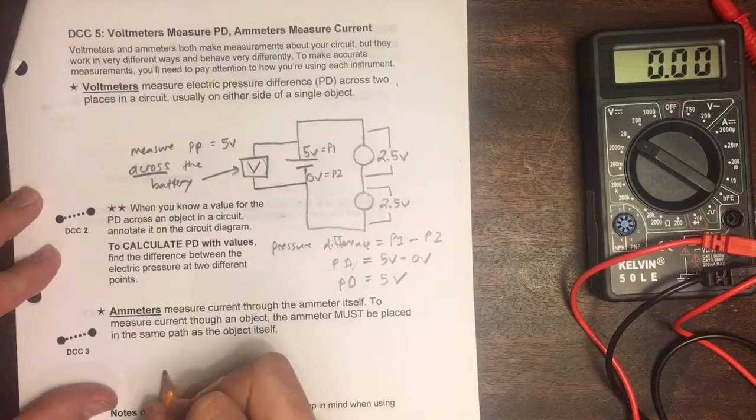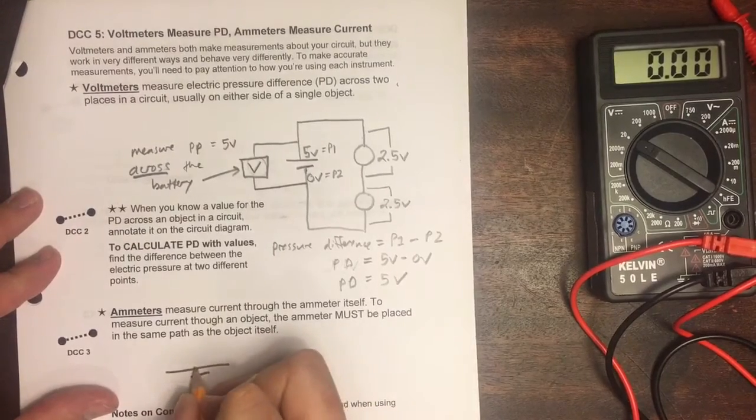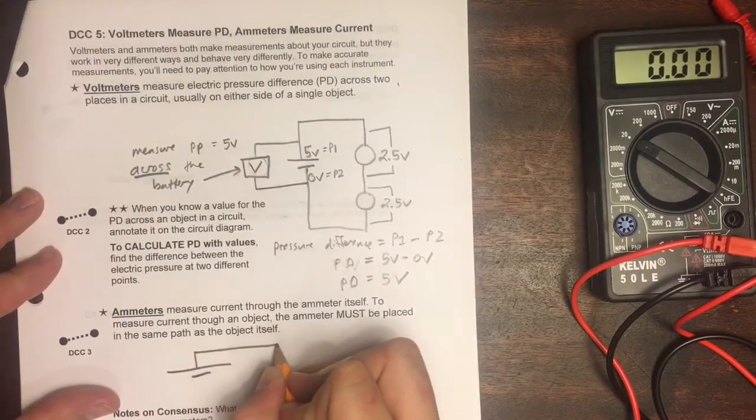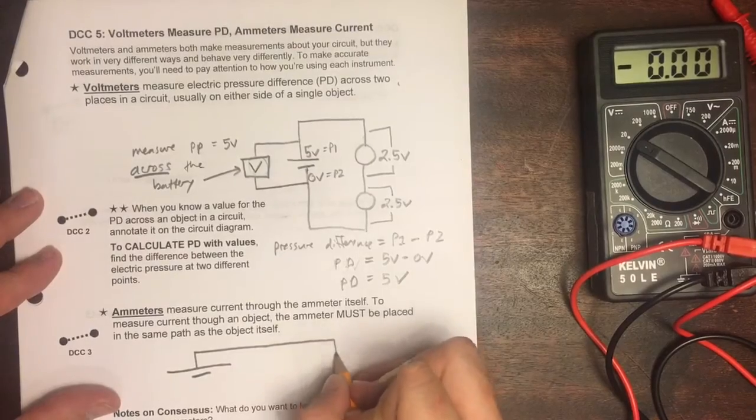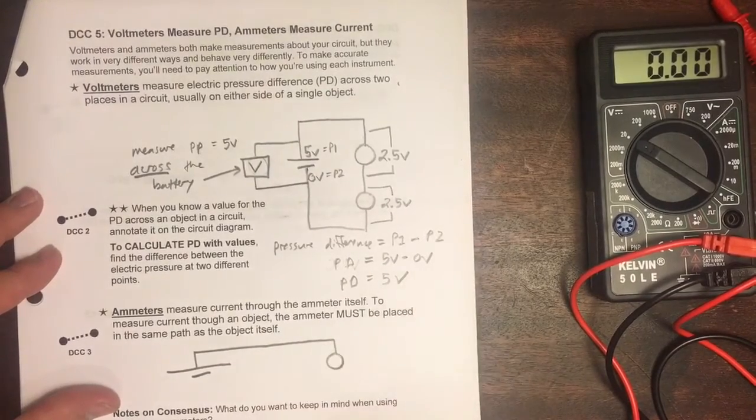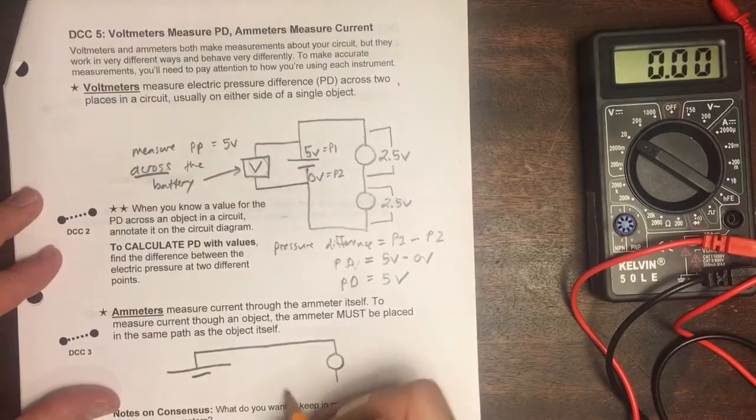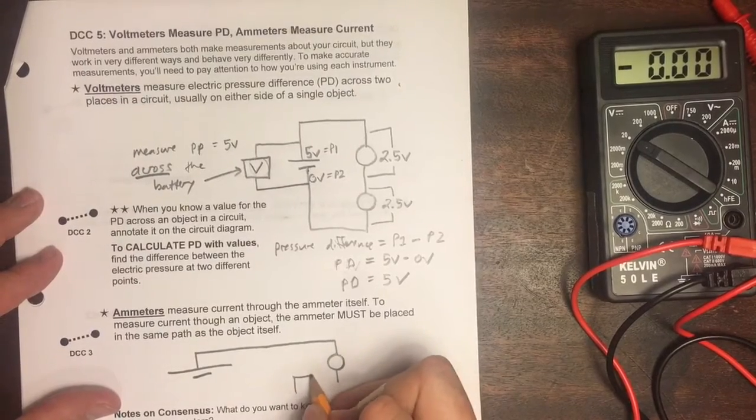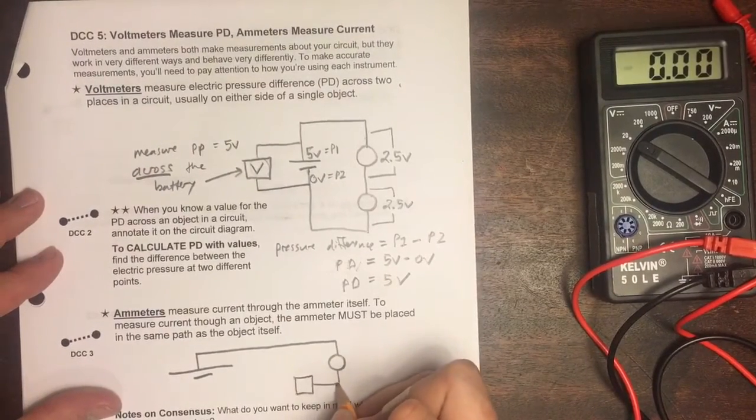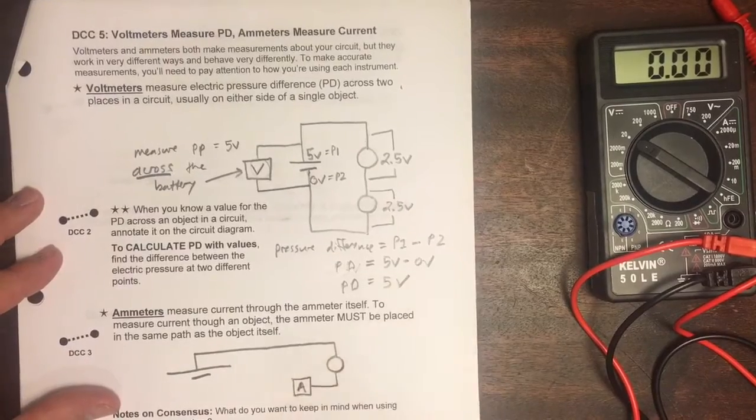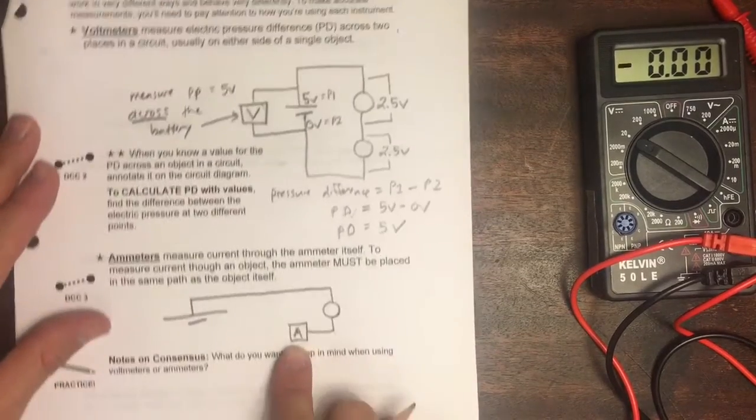This is something you've done already, but if we imagine our battery and our circuit with a bulb in it, if we want to measure the current through this bulb, we need to put the ammeter in the same path as the bulb.